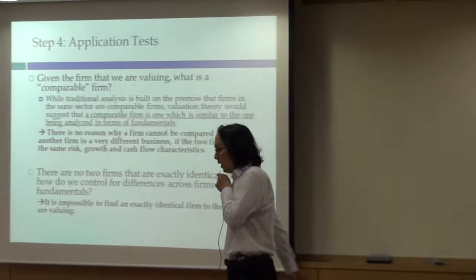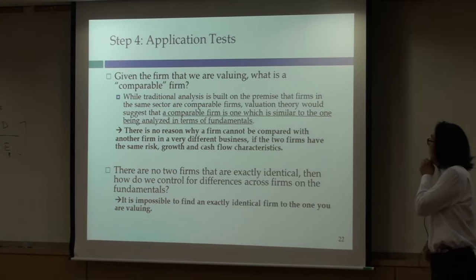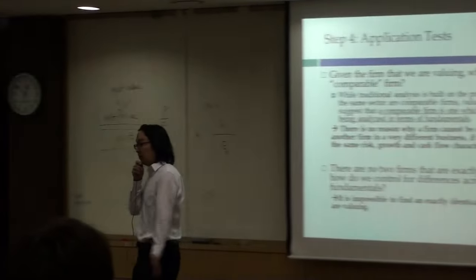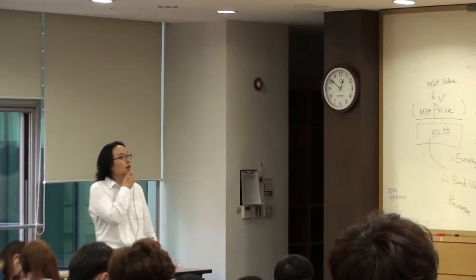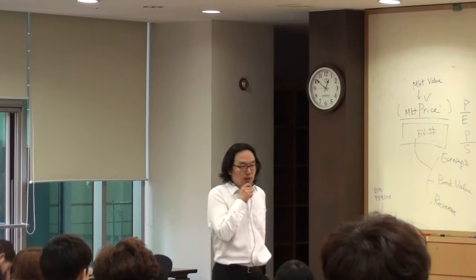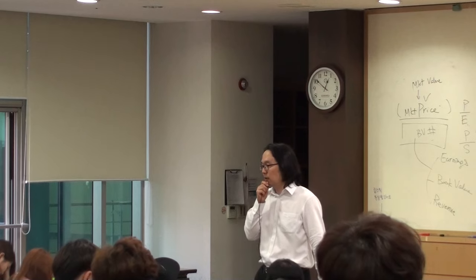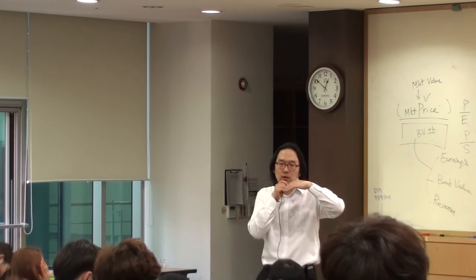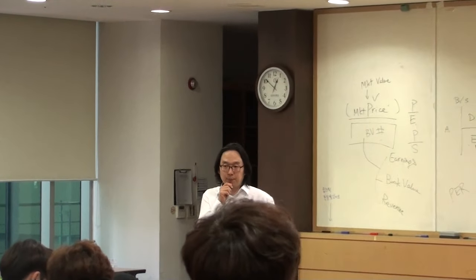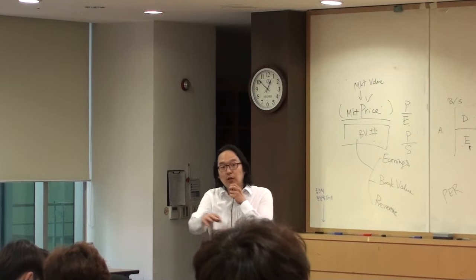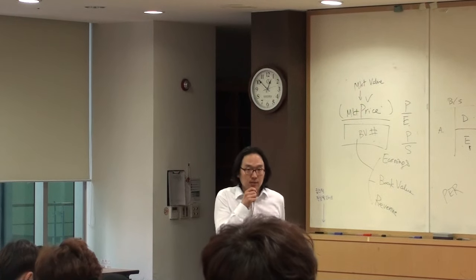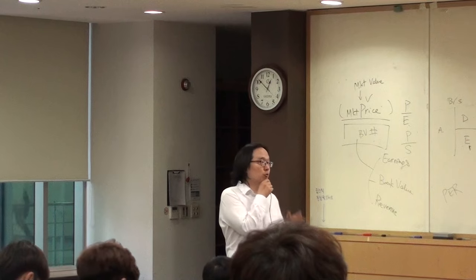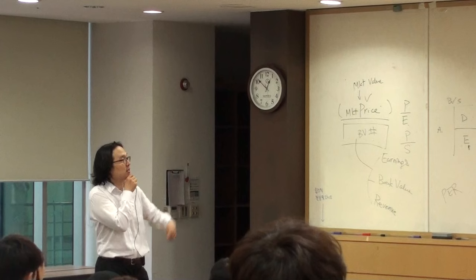Final step: application. Given the company we are valuing, what are the comparable companies? You might want to compare with identical twin companies, but that's extremely hard to find. Here is the key thing: you don't need to restrict yourself to the same industry companies. When comparing Tesla Motors, you don't need to restrict to auto or car manufacturing companies only, or battery companies only. You can compare with any other companies, as long as they have similar risk — like beta — and similar cash flow characteristics. They should be comparable firms regardless of industry. That's the key message.